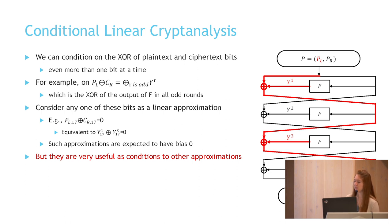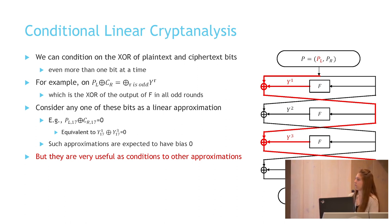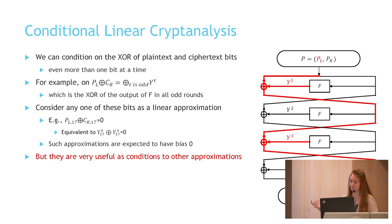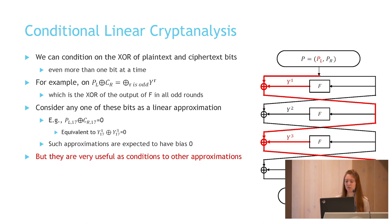For example, PL (the left half of the plaintext) XOR Y1 (the output of the f-function in the first round) XOR Y3 (the output of the f-function in the third round) equals CR (the right half of the ciphertext). Therefore, we can calculate the XOR of the outputs of the f-function in all the odd rounds from the plaintext and ciphertext. This information is not probabilistic, unlike a general linear approximation. Such XOR bits, when viewed as linear approximations, typically have bias zero, but they are very useful as conditions to other approximations.